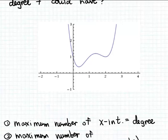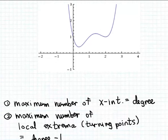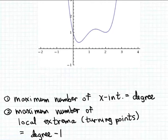Let's recall a couple of basic facts about polynomial functions. These are very important facts: the maximum number of x-intercepts that a polynomial function can have is the same as the degree of the polynomial function.